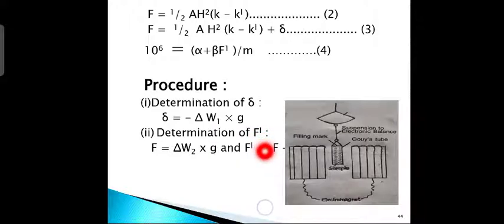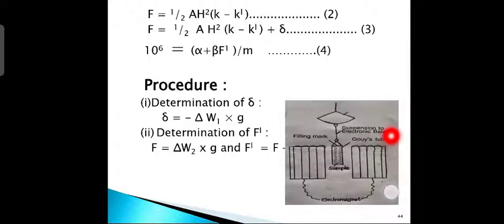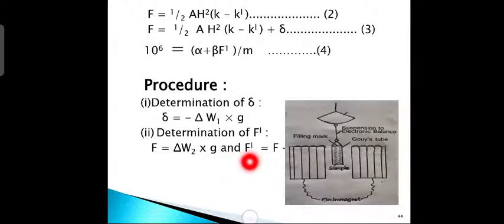How to determine F′: the Guise tube is filled with the complex compound up to the mark with close packing. It is suspended to the electronic balance between the poles of the electromagnet. The weight of the sample is determined once out of the field and once in the field. The difference in weight Δw₂ is calculated. Then F = Δw₂ × g, and F′ = F − δ.